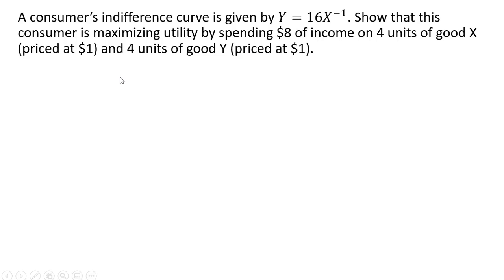We want to show that this consumer is maximizing utility by spending $8 of income on 4 units of good X priced at $1 each and 4 units of good Y also priced at $1 each.